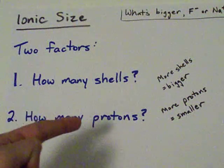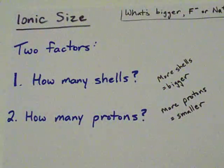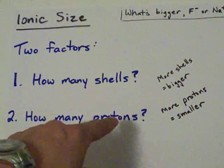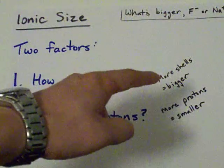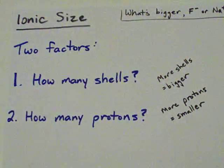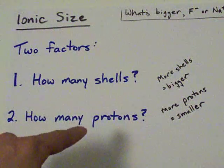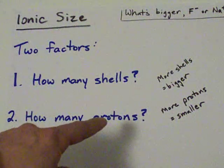And secondly, how many protons does the ion have? If you have two atoms that have the same number of electrons, you're going to have the same number of shells. And if you have the same number of shells, I'm going to ask you to consider how many protons there are.